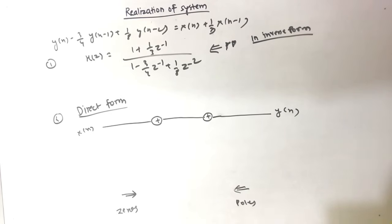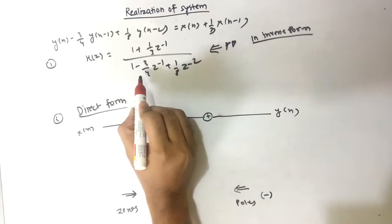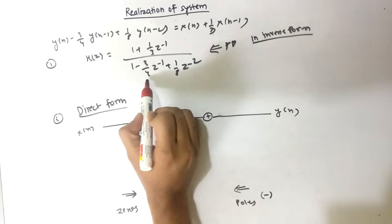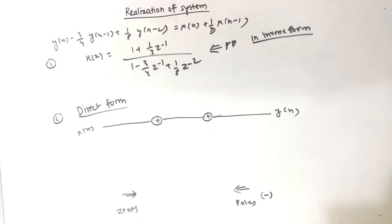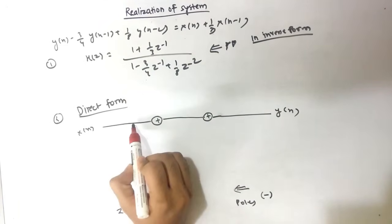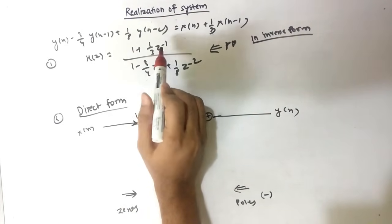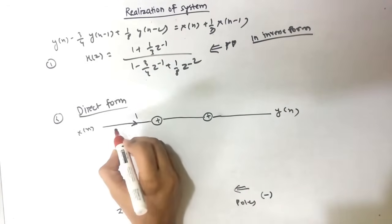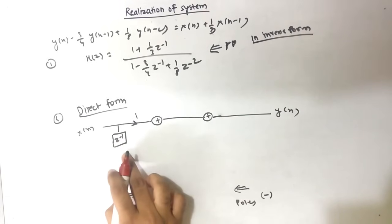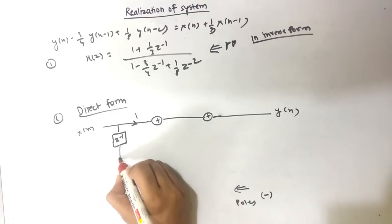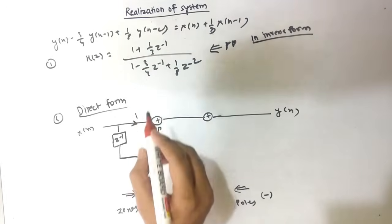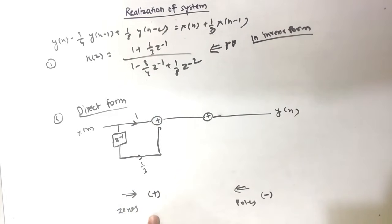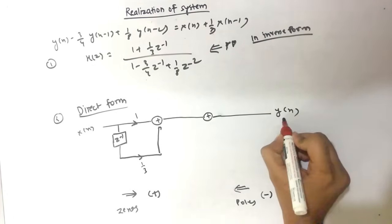The feedback direction is the backward direction, so we write the negative of the coefficient values. The pole values are 3/4 and 1/8; since minus 3/4 appears in the equation, we plot +3/4 here. For the zeros side: the coefficient 1 goes directly as is, and the term (1/3)Z⁻¹ introduces a delay block (Z⁻¹), with coefficient +1/3 since we are in the forward direction. Zeros have positive signs and poles have negative signs.